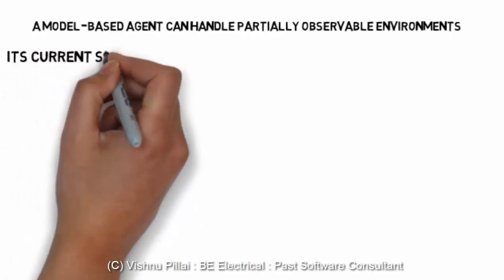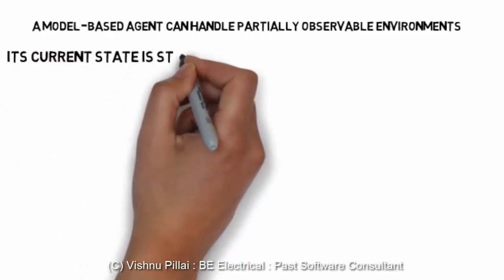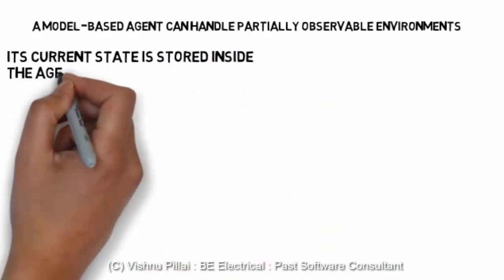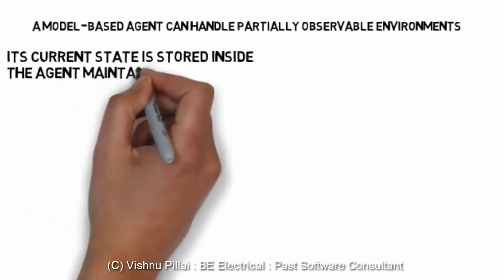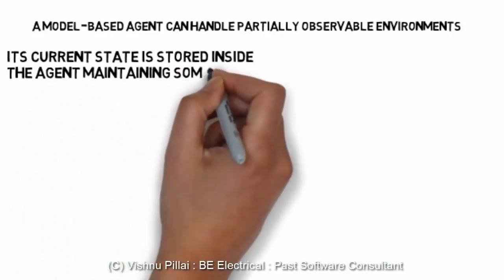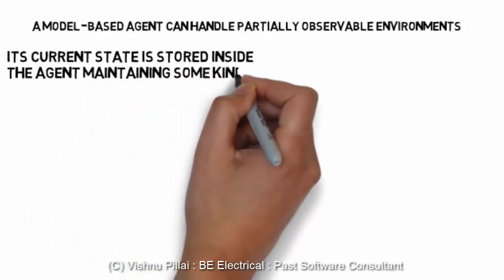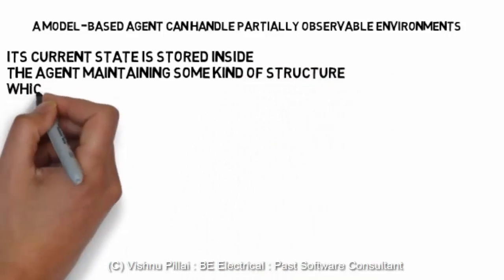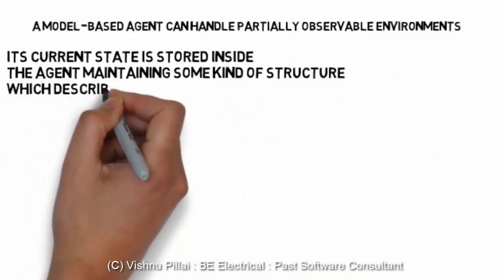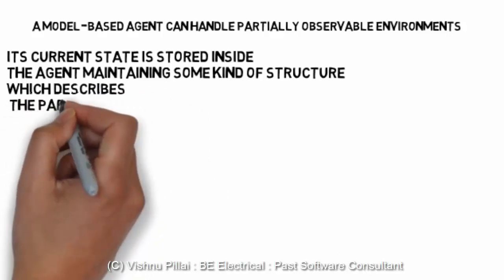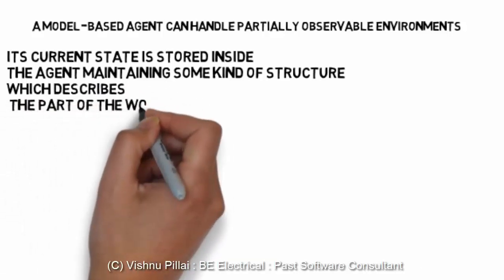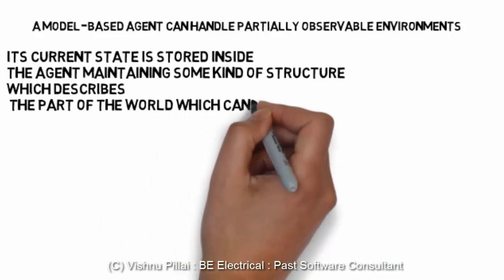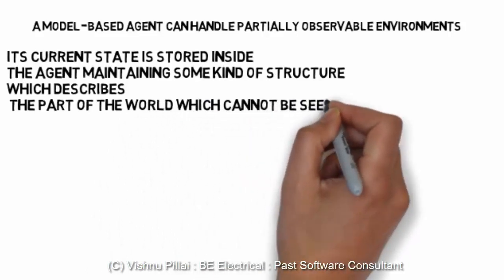The agent takes into consideration the effect of its actions on the environment, and it considers how its environment will evolve. The evolution model of its environment is fitted into the agent's memory, enabling the agent to take various decisions. The current state is stored inside the agent in some kind of structure.